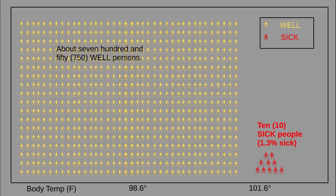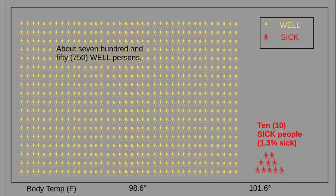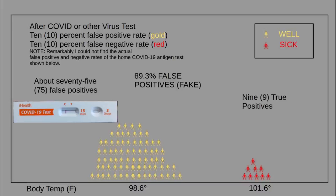This slide shows an incidence rate of 1.3%, with about 760 total people tested. About 750 — the gold figure icons — are well, healthy people. Only 10, again, are sick — the red figure icons. When the people are tested, we get about 75 false positives and 9 true positives. That means 89.3%, almost 90% — nine-tenths — of the positive test results are false, fake results.